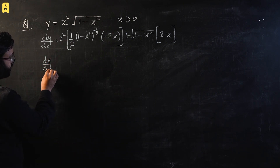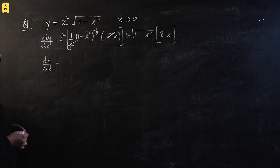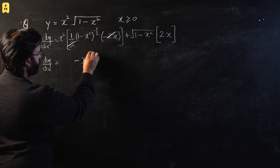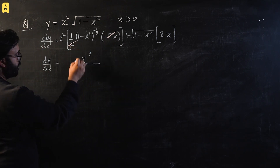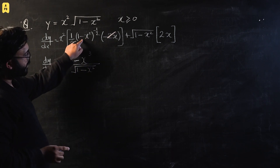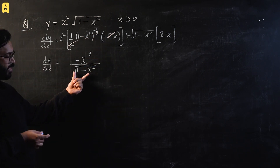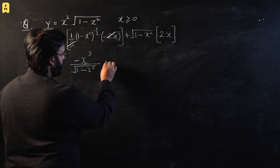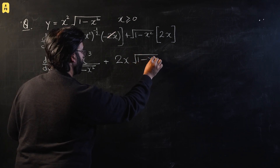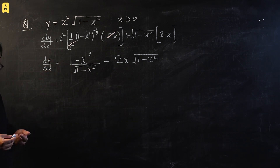Now let's simplify. The 2 in the chain rule and the 2 from differentiating x squared cancel, giving dy/dx equals negative x cubed over the square root of (one minus x squared) — since bringing the negative-half power to the denominator makes it positive one-half — plus 2x times the square root of (one minus x squared). This is our final differentiation. Now let's set it equal to zero.